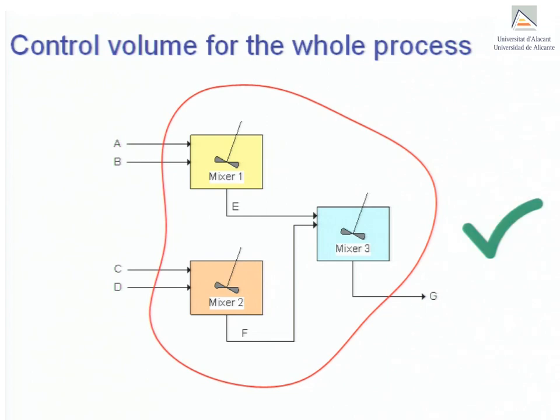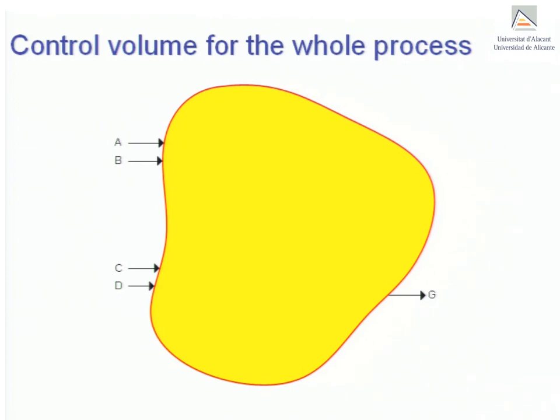The idea is to imagine the interior of the control volume as a single process unit. Since we are only interested in visualizing those streams entering or exiting the system as a whole. You need to imagine something like this. And you should not worry about what happens on the inside of the yellow area. It is easy to see that streams A, B, C and D enter and that only one stream, G, exits the control volume.